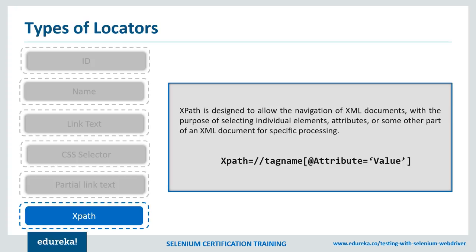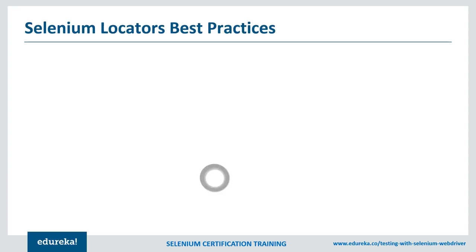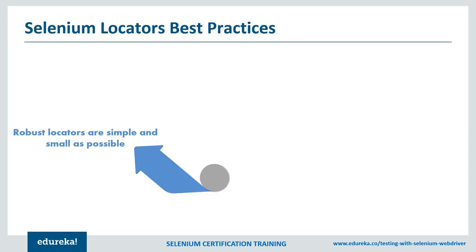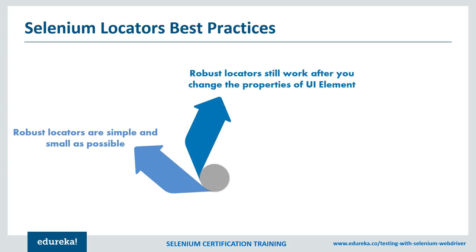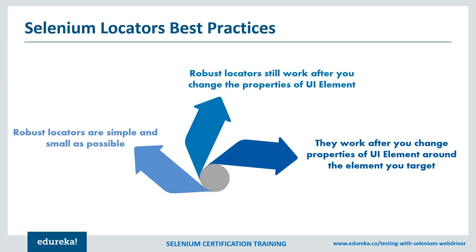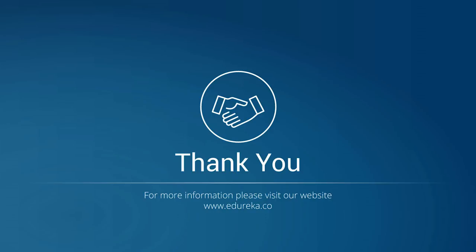This is all about the types of locators. What is the preference order? ID is given first preference because it is unique; name is also considered a unique locator. Second preference goes to CSS selectors and XPath. Next comes link text, which is useful only for links, so it gets third preference. Partial link text is fourth preference. For best practices: keep locators as simple and small as possible, using simple locator names like ID, name, link text, CSS selectors, XPath, etc. Locators will still work even after you change the properties of the user interface elements, and they work even after you change properties of UI elements around the element you target.